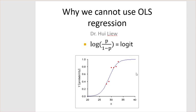Let me reiterate why we cannot use ordinary least-square regression when our dependent variable has only two categories. As you have seen before, the dependent variable for logistic regression is represented by the logit.